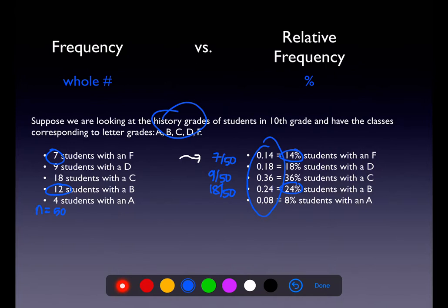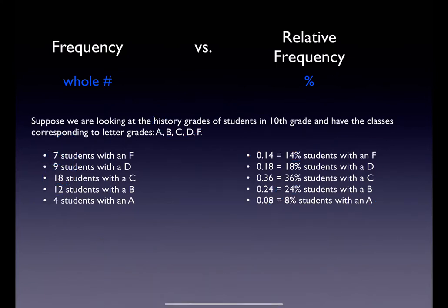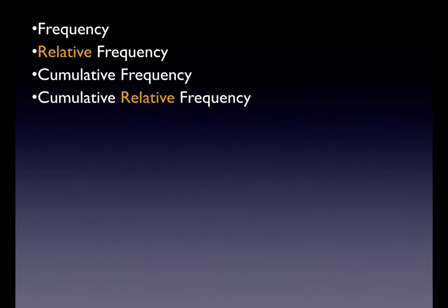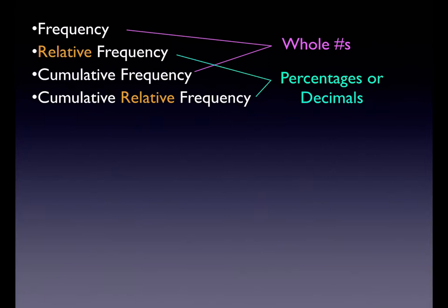The reason relative frequencies are a little bit nicer is because they allow us to compare this history class with any history class regardless of sample size. If I was using frequency data, I could only compare it to another class that had exactly 50 students. For the Dixie cup experiment, I had to use relative frequency because not every student had the exact same number of beads in their cup. A lot of times I always prefer relative frequencies — I think they're more honest statistics.